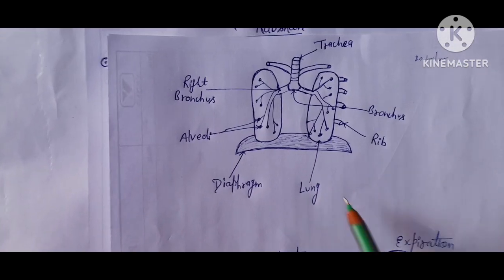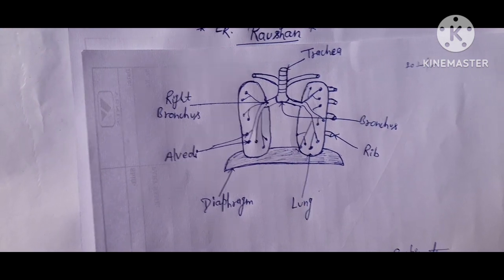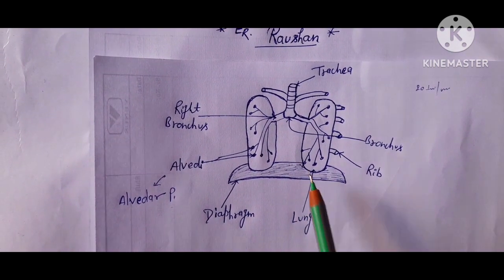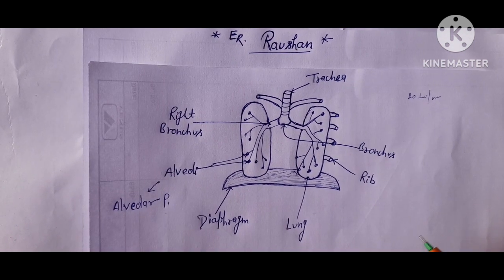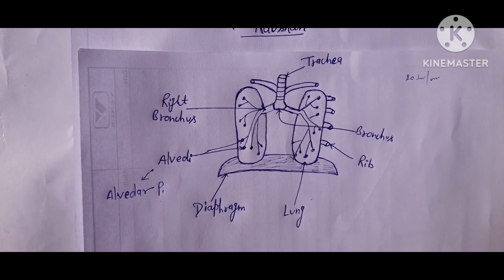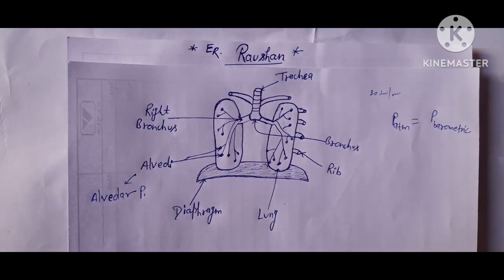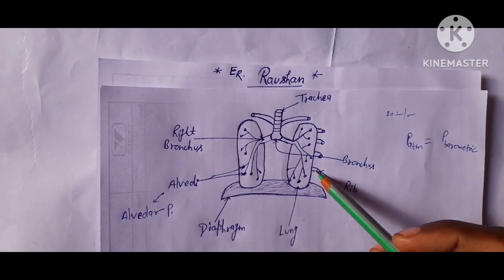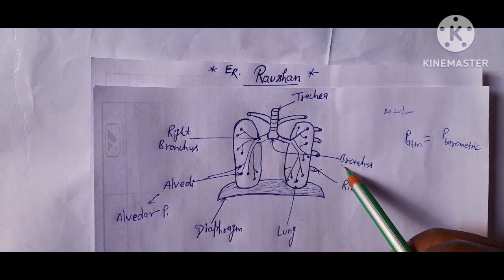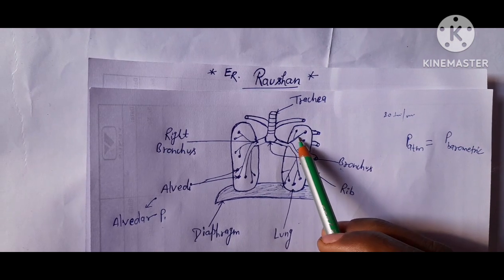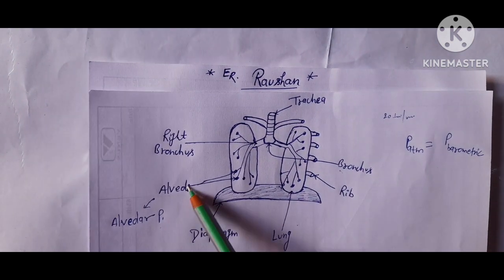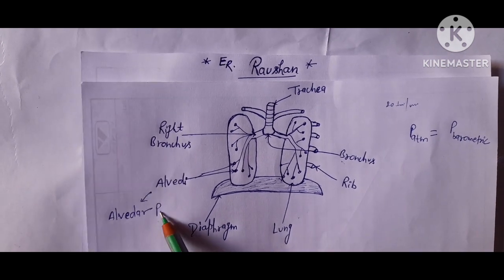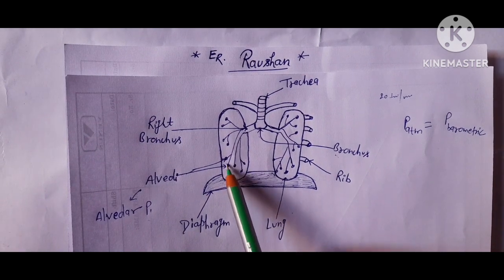Our lungs are made up of spongy, stretchy tissues which expand and contract during breathing. The key anatomy includes the trachea, ribs, bronchi (right bronchus and left bronchus), the diaphragm, and the lung alveoli. The pressure inside the lung alveoli is called alveolar pressure.